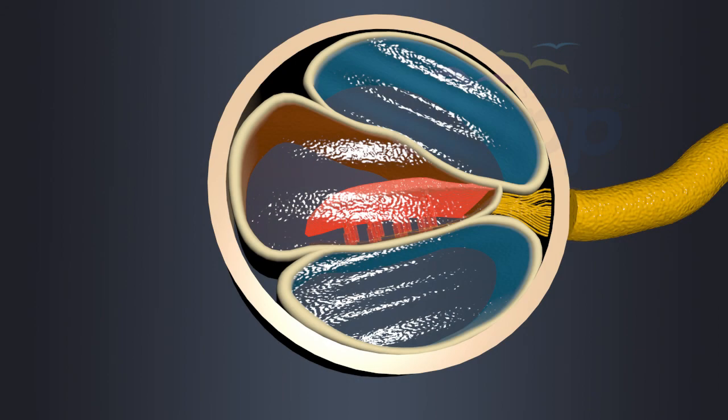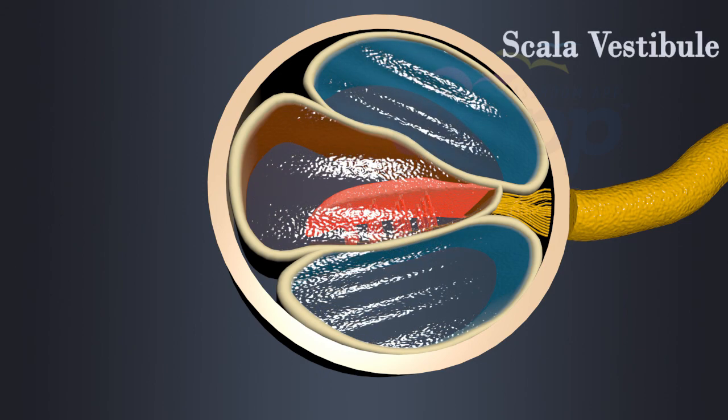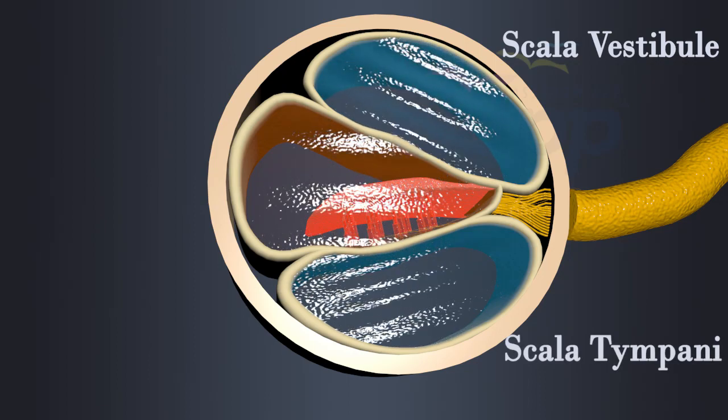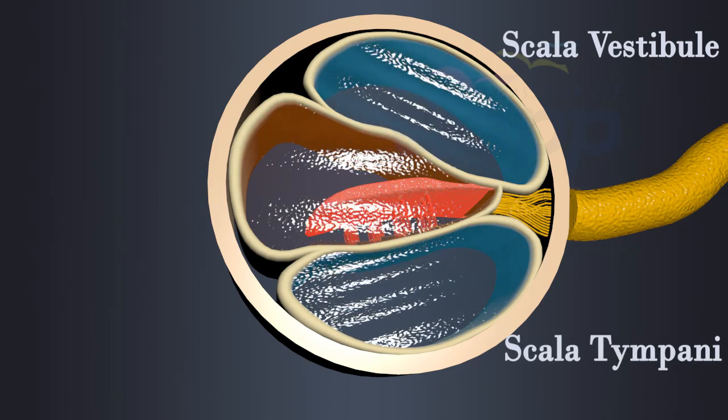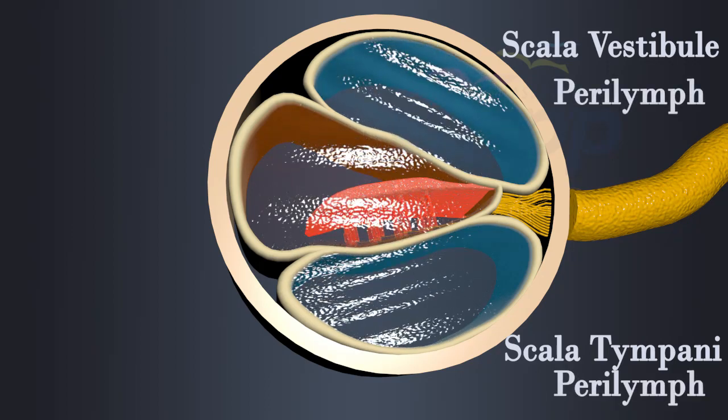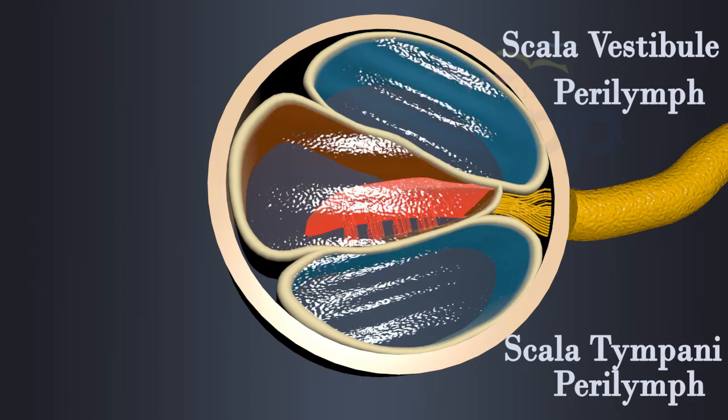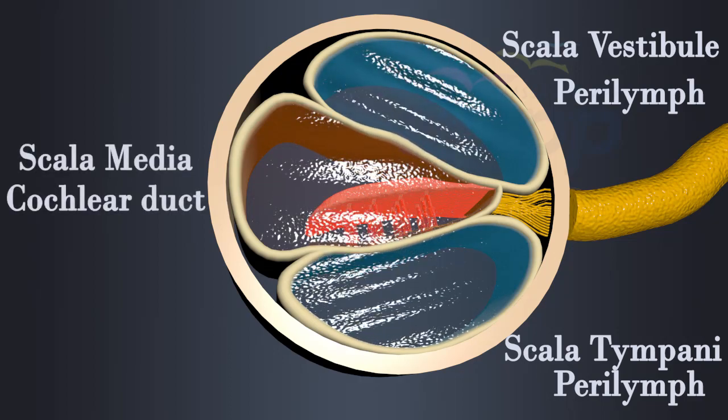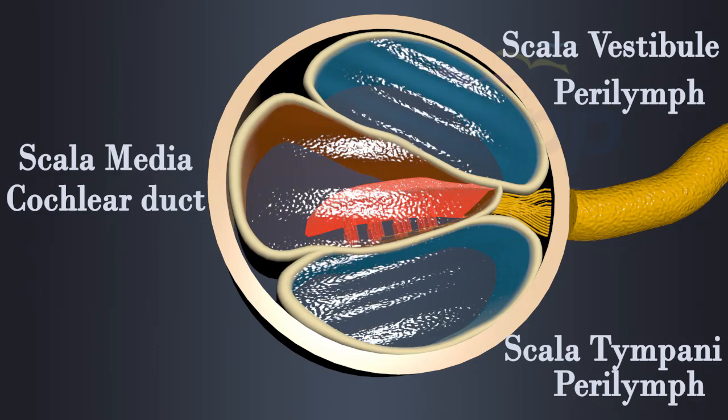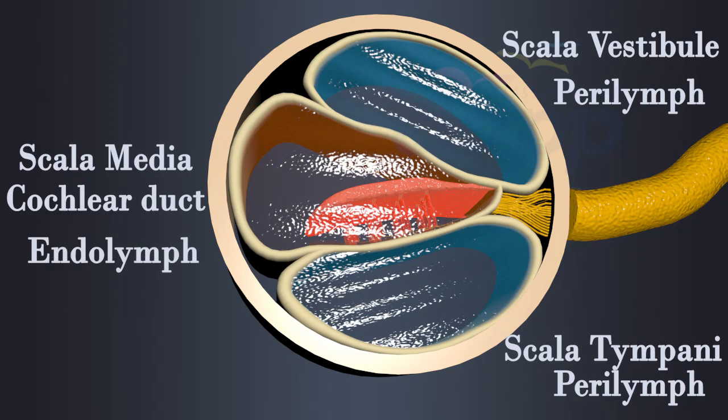Cochlea is divided into three fluid-filled chambers. Upper chamber known as scala vestibule and lower chamber known as scala tympani. Scala vestibule and scala tympani are filled with perilymph fluid. The chamber in the middle that separates scala vestibule from scala tympani is called scala media or cochlear duct. Cochlear duct or scala media is filled with endolymph.